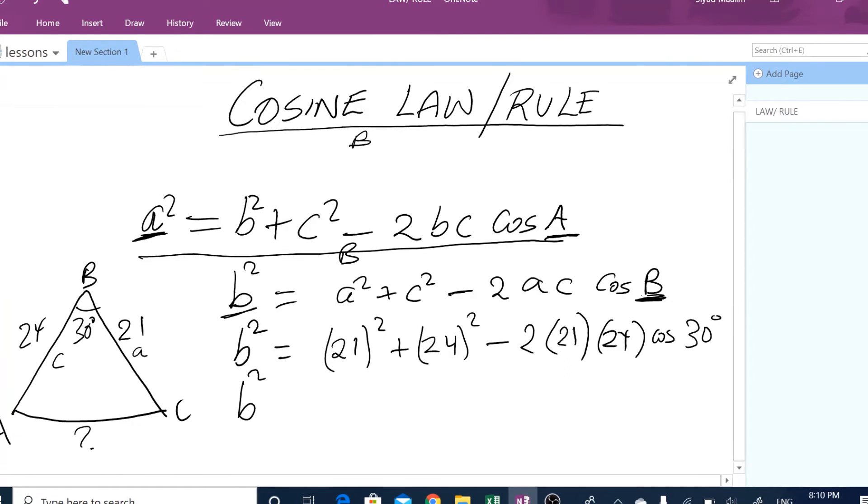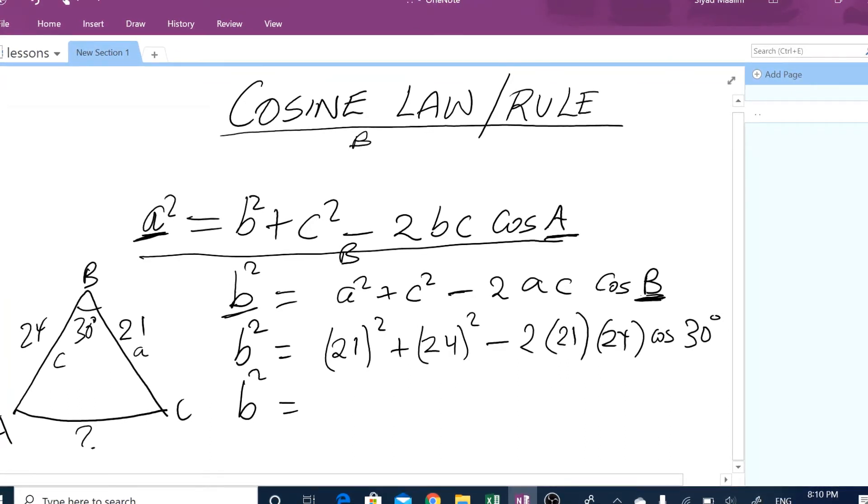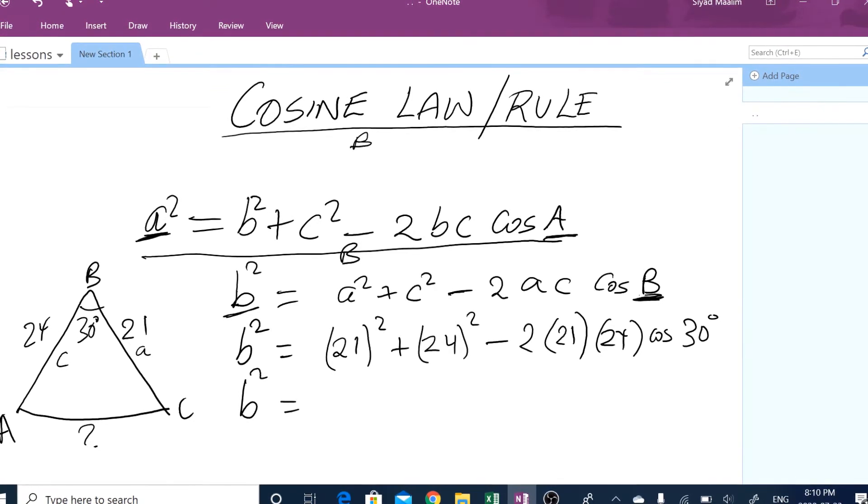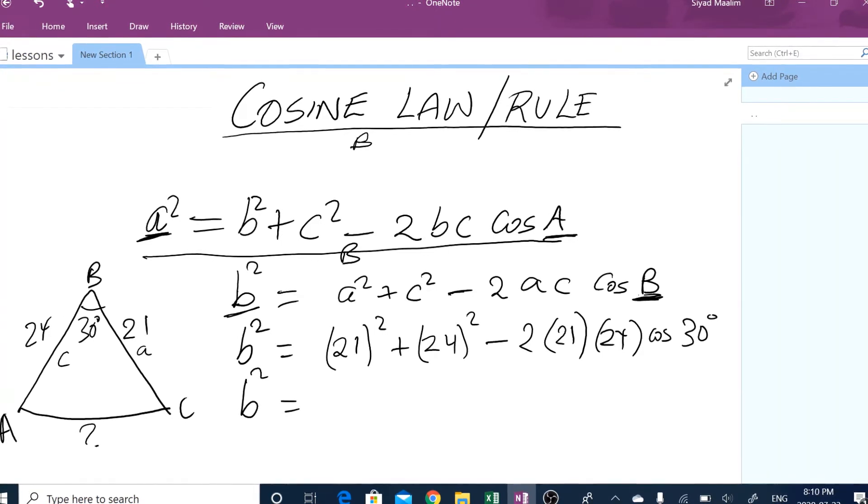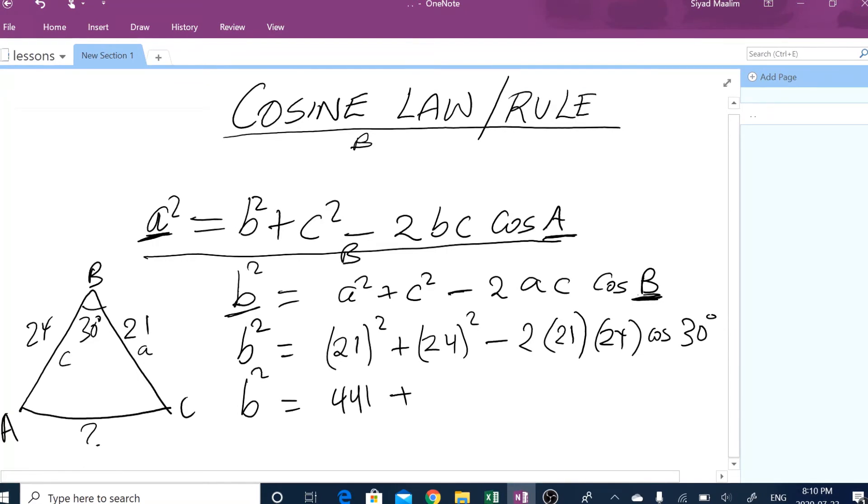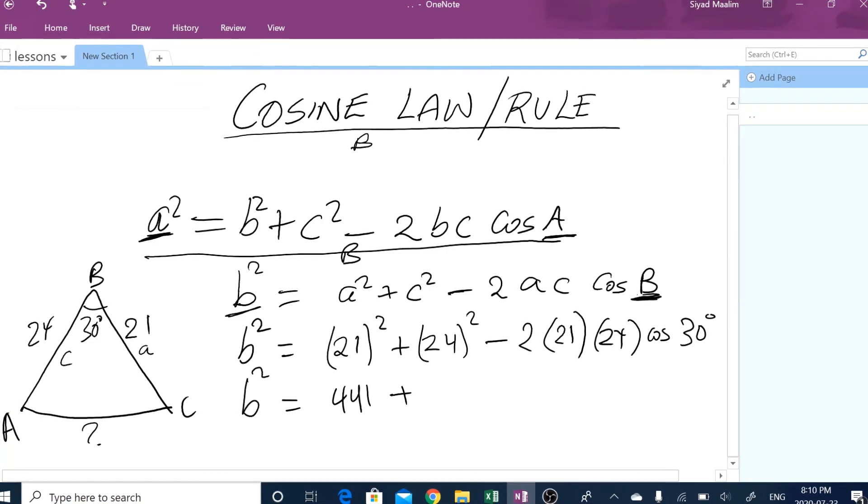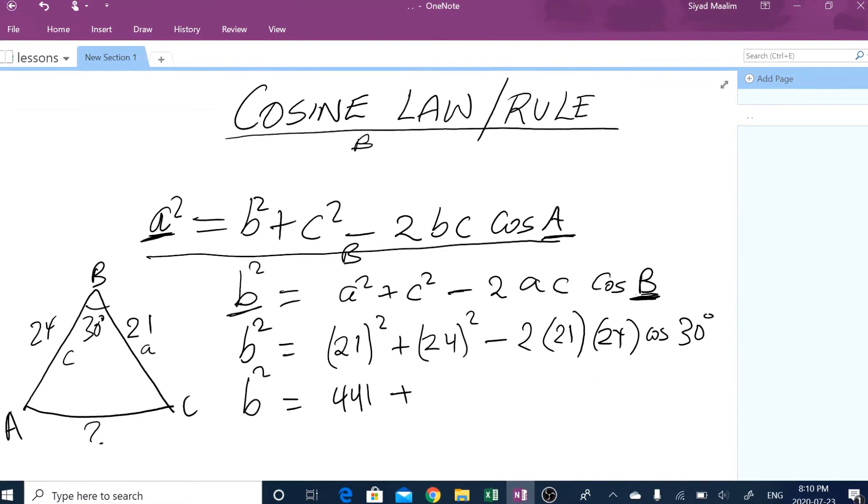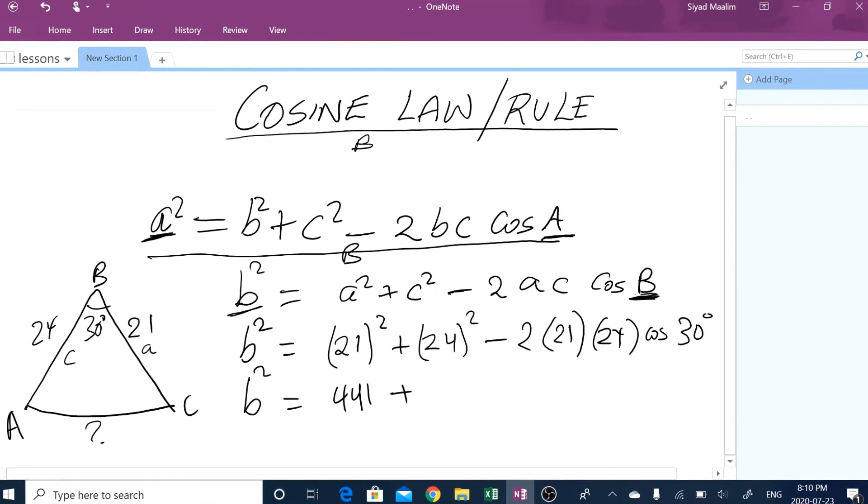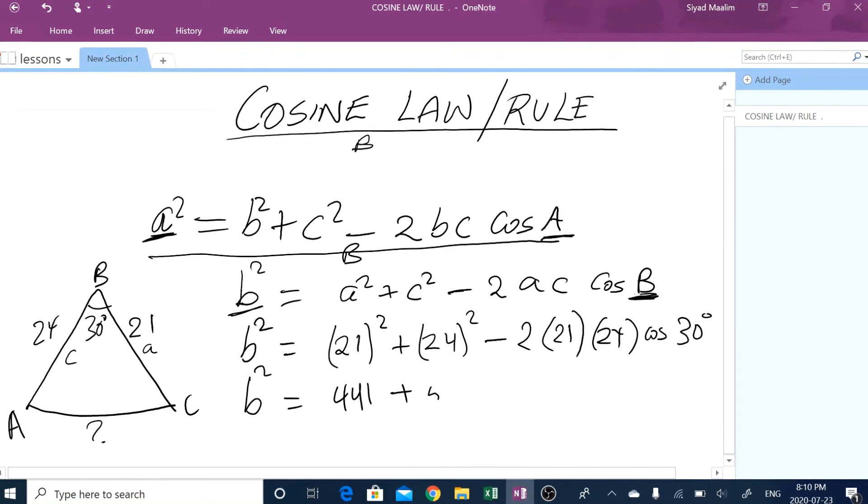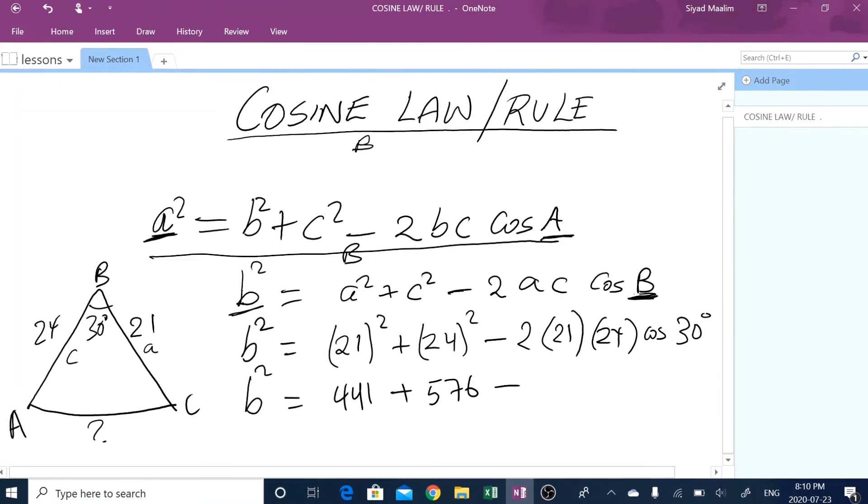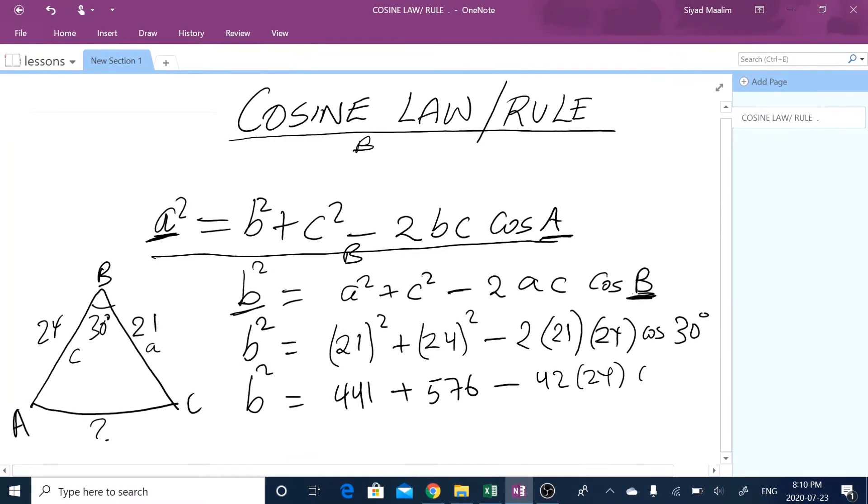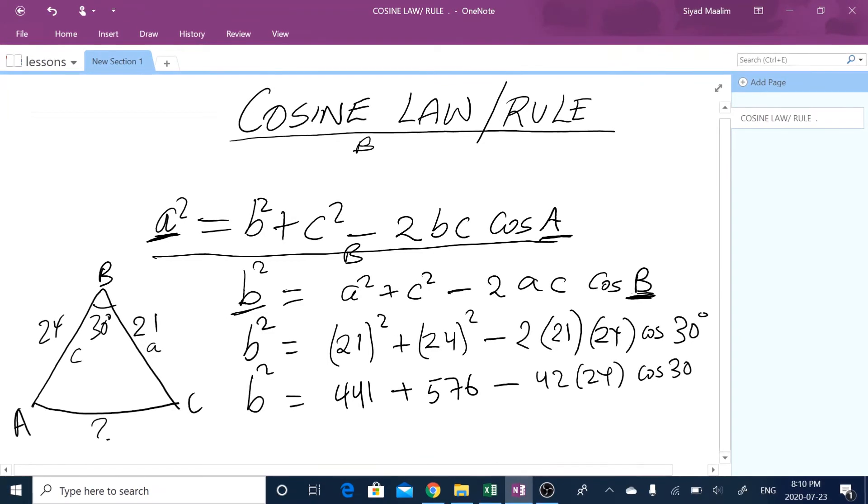So b squared equals 21 times 21, what is 21 multiplied by 21, that is 441. So that is 441 plus 24 times 24, I believe that is 576. Let me confirm, that is 576 minus 2 times that is 42 multiplied by 24,